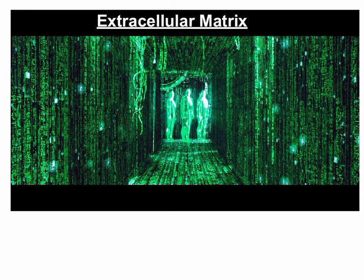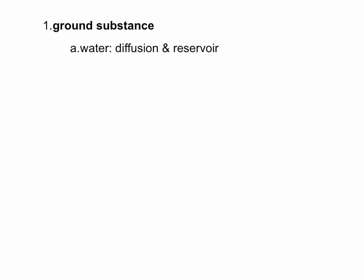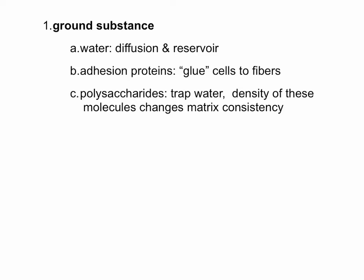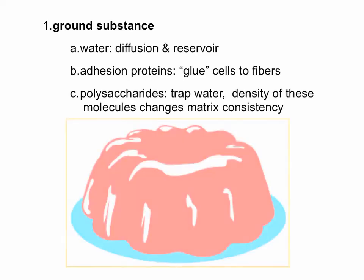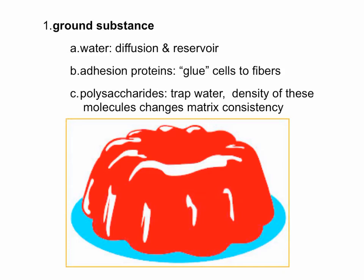Every connective tissue has cells and extracellular matrix. Now let's look at the matrix. The matrix has two parts. The first is the ground substance, which is usually made up of a combination of water, adhesion proteins, and polysaccharides — long chains of sugar molecules. The ground substance kind of reminds me of jello, though it's not always that consistency.